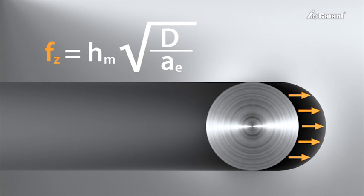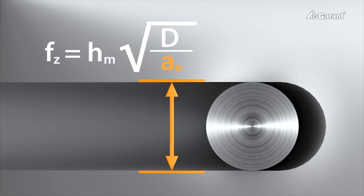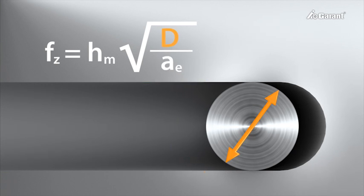FZ consisted of the contact width AE, which also indicates the arc of contact, the diameter D of the milling cutter, and the average chip thickness HM.